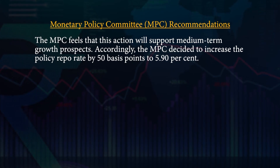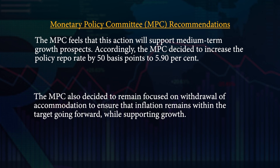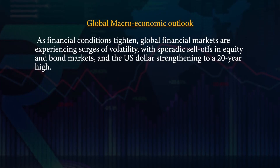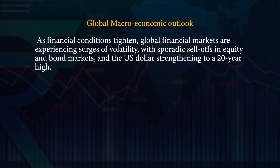The MPC also felt that this action will support medium-term growth prospects of the Indian economy. Accordingly, the MPC decided to increase the policy repo rate by around 50 basis points to around 5.9%. The MPC also decided to remain focused on withdrawal of accommodation so that inflation was ensured to remain within the target going forward while supporting growth. These decisions also had some impact on the global macroeconomic outlook. Global economic activity is weakening under the impact of the protracted conflict in Ukraine and aggressive monetary policy actions and stances across the world. As financial conditions tighten globally, financial markets are experiencing surges of volatility with sporadic sell-offs in equity and bond markets, and the U.S. dollar is also strengthening toward a 20-year high.